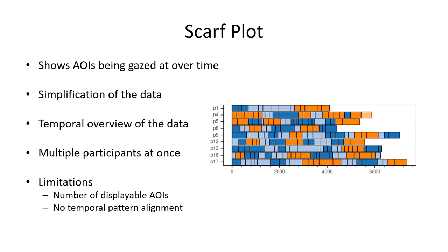A scarf plot shows the areas of interest that participants gaze at over time by stacking them horizontally as well as vertically. It is some kind of simplification of the time-dependent data and provides a temporal overview. Multiple participants can be shown at once. Participant groups can be selected and, in an advanced version, even participant clustering based on time-dependent AOI patterns can be applied. However, the number of displayable AOIs is limited and there is no temporal pattern alignment.